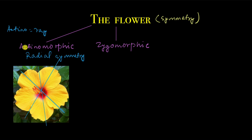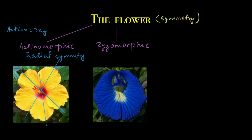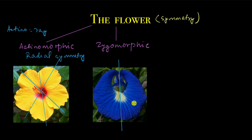That's one type of symmetry present in flowers. The other type is zygomorphic, in which there is just one plane which can divide the flower into two equal halves. This is the only plane that can divide the flower into two equal halves, and this is called bilateral symmetry.